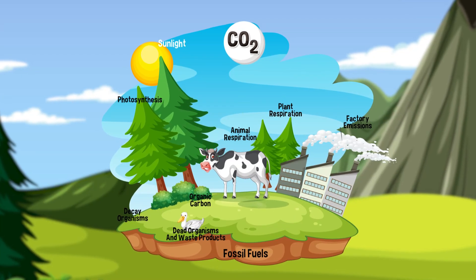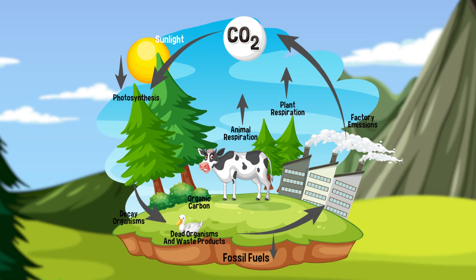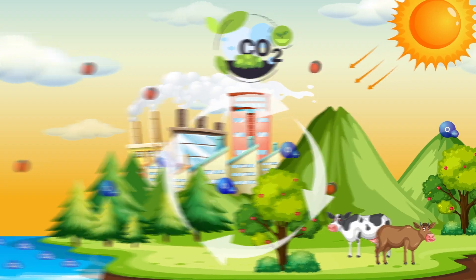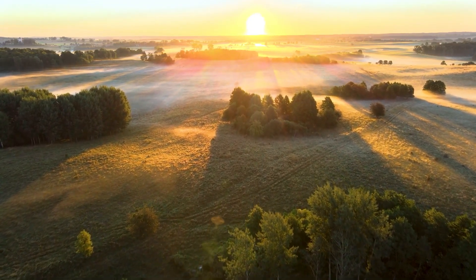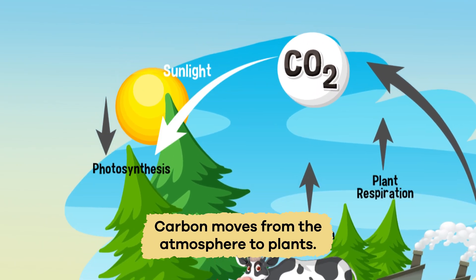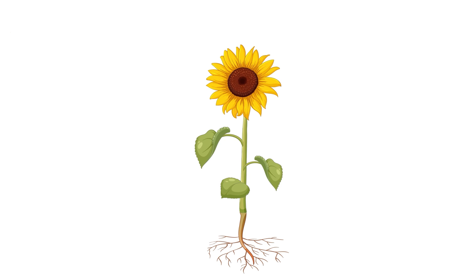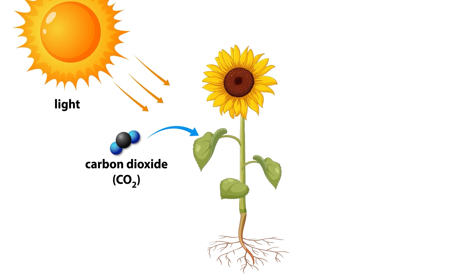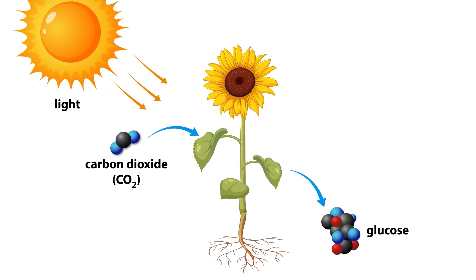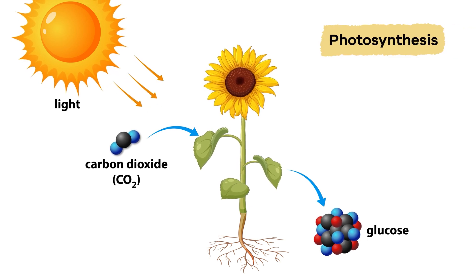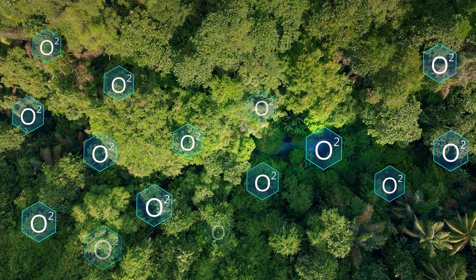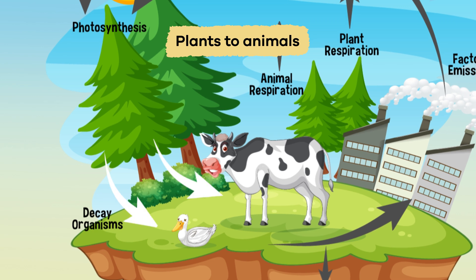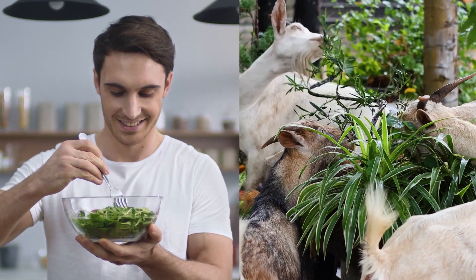Instead, it is a continuous process with several steps. What are the steps of the carbon cycle? Glad you asked. Let's start with the atmosphere. Carbon moves from the atmosphere to plants. During this step, plants take in carbon dioxide from the air and combine it with the energy from the sun to create their own food in a process called photosynthesis.